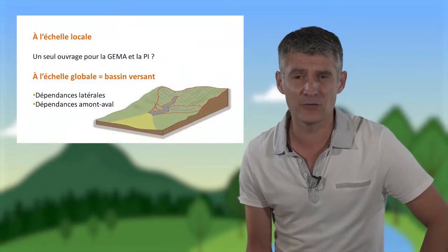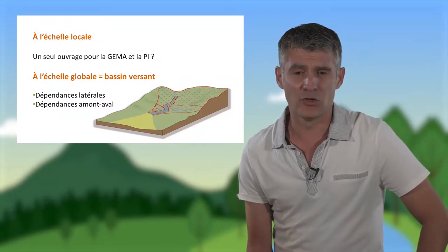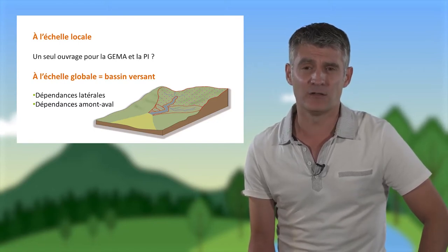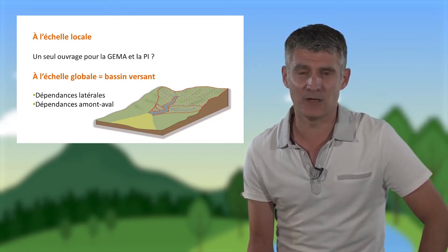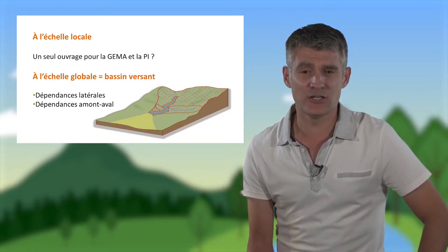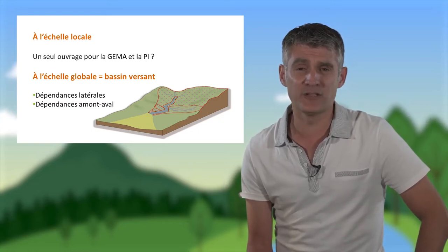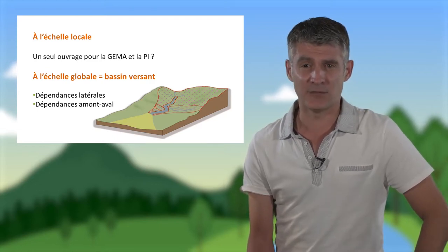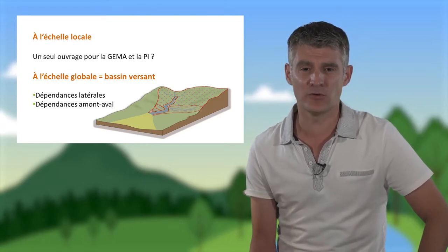En résumé, faire de la GEMAPI, ça veut dire à l'échelle locale se demander si un seul aménagement ou même un seul ouvrage ne permet pas de répondre à la fois à la GEMA et à la PI. Et à l'échelle globale du bassin versant, s'interroger sur les dépendances latérales — quelles conséquences d'un aménagement rive droite sur la rive gauche et inversement — et sur les dépendances amont-aval.